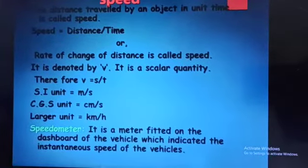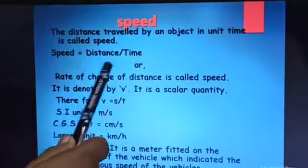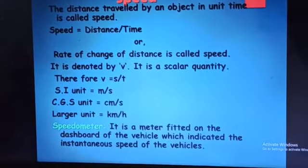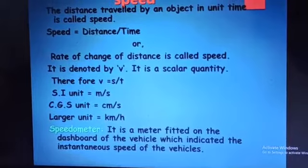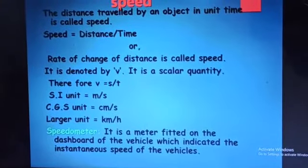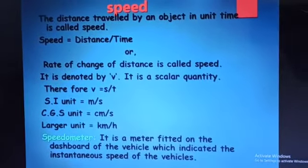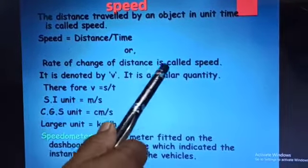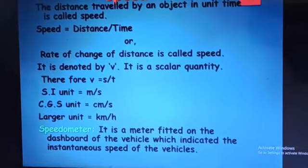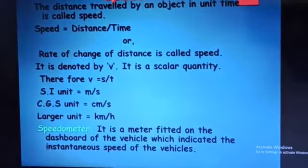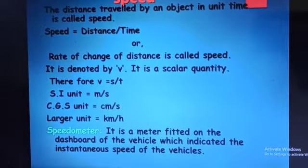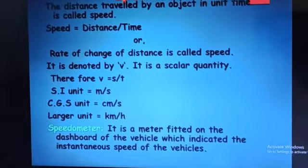Speed is an important concept. Speed is distance upon time — the distance traveled by an object in unit time is called speed. Speed is a scalar quantity, meaning it has magnitude only. Therefore, v is equal to s upon t. The SI unit is meter per second and the larger unit is kilometer per hour.